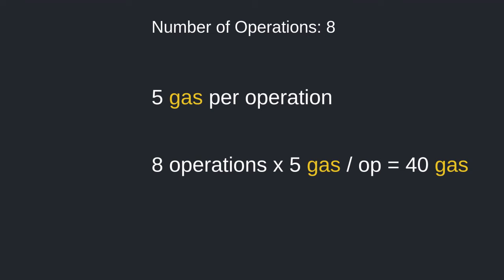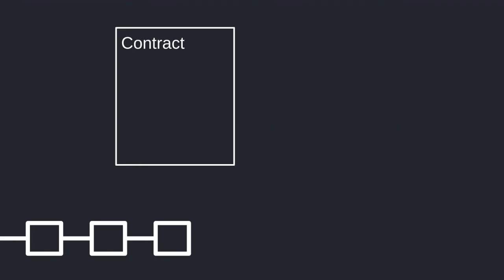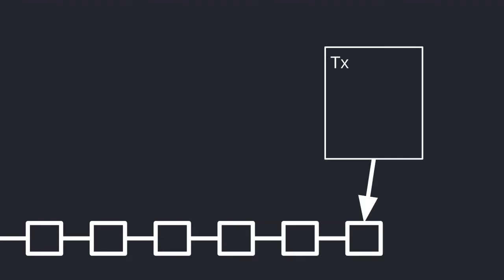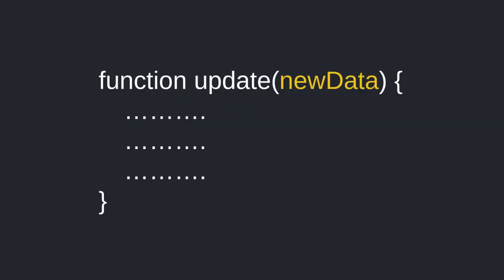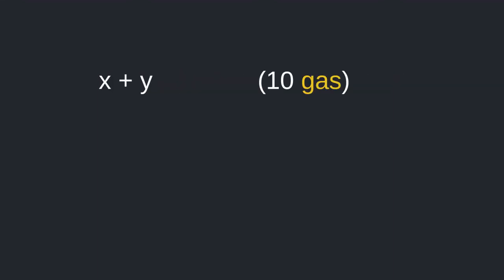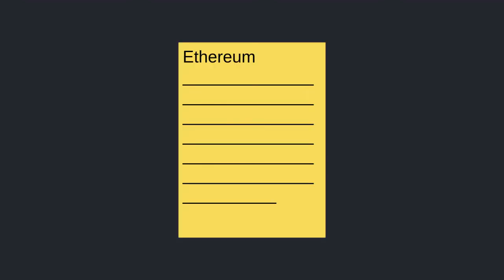The total amount of computation used to process a transaction is measured in a special unit called gas. For example, the amount of gas used to deploy a contract might be 3,000 gas, and calling a function to update a variable might be 200 gas. How is the amount of gas for a transaction calculated? A transaction performs a bunch of smaller computations — every computation needs a specific amount of gas. For example, adding two numbers x and y might require 10 gas, and assigning a number to a variable might need 5 gas. The exact gas required for each computation is defined in the Ethereum whitepaper.